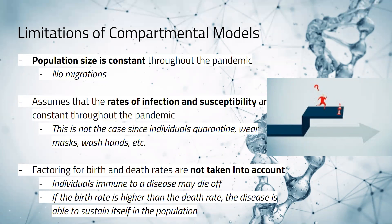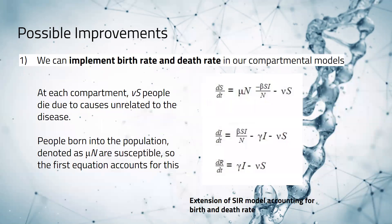Ways we can improve on this model include implementing birth and death rates into our compartmental models. In each compartment, mu times S people would die due to causes unrelated to the disease. People born into the population, denoted as mu times N, are susceptible. So the first equation would account for this.